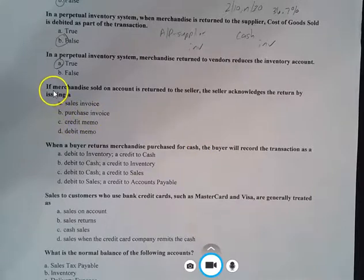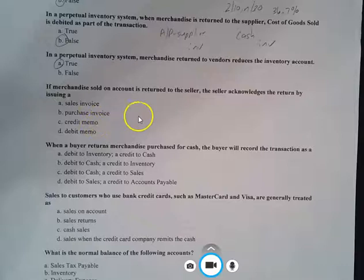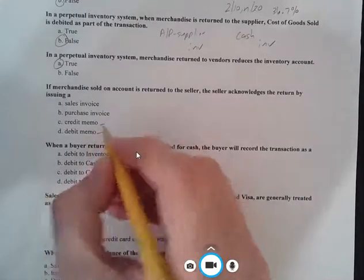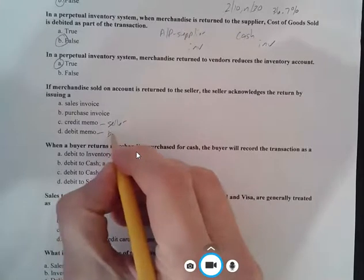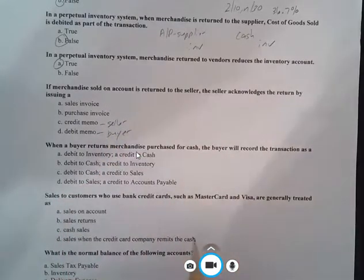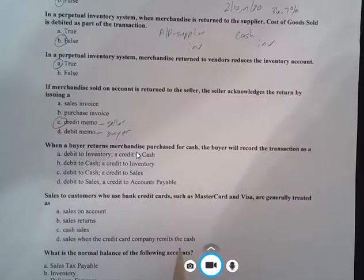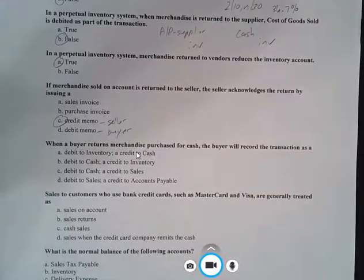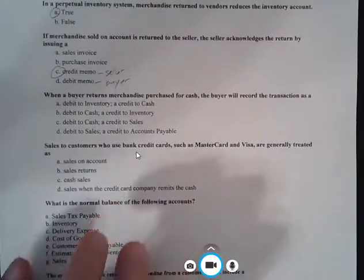All right, moving on. Multiple choice questions. It says, if merchandise sold on account is returned to the seller, the seller acknowledges the return by issuing a sales invoice, purchase invoice, credit memo, debit memo. And what we said was that the seller issues a credit memo, the buyer issues a debit memo. And so if we think about that, that gives us our answer right there. Okay, a little bit of memorization here. Think about it, though it makes sense. The seller is issuing a credit. So they're going to use a credit memo.